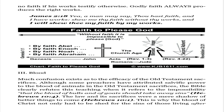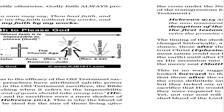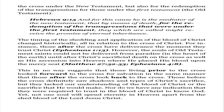III. Blood: much confusion exists as to the efficacy of the Old Testament sacrifices. Although some preachers have attributed salvific power to the blood of animals in the Old Testament sacrifices, the Bible clearly refutes this teaching when it refers to the impossibility that the blood of bulls and of goats should take away sins (Hebrews 10:4). The law and its sacrifices were a mere shadow of better things to come (Hebrews 10:1). This is why the blood of Christ not only had to be shed for the sins of those living after the cross under the New Testament, but also for the redemption of the transgressions for those under the First Testament — the Old Testament.